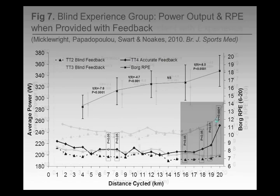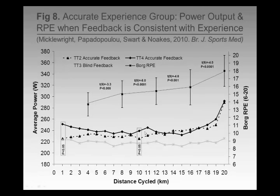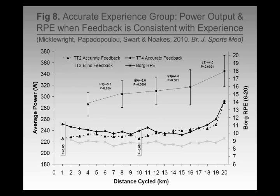In the accurate feedback group, you get the opposite effect — you take information away and their pacing just goes completely flat. What we're essentially doing is creating a situation of uncertainty, or greater uncertainty, for the athletes, and it's causing them to make a decision in how they pace these events.